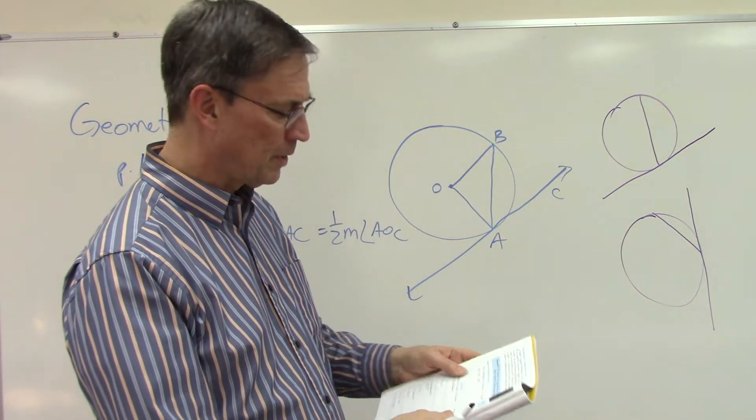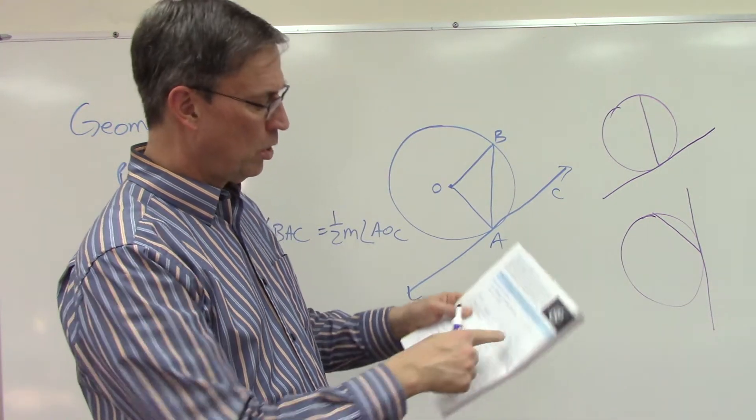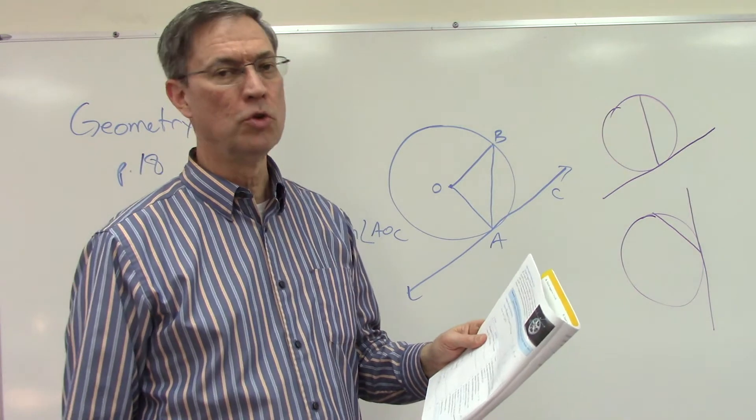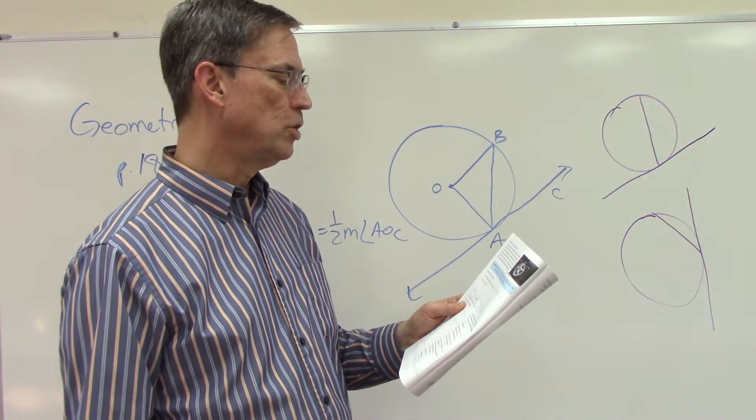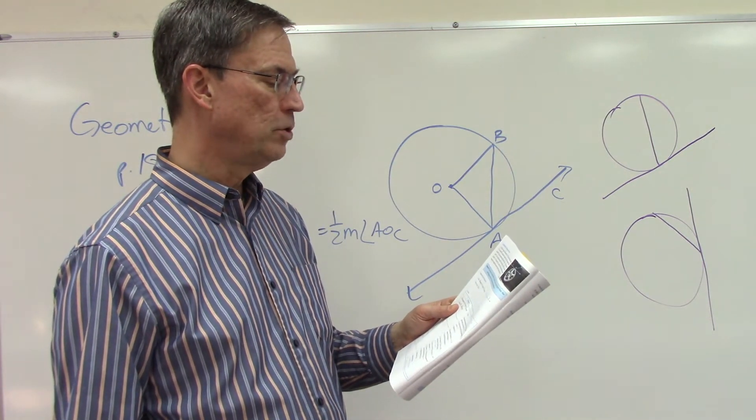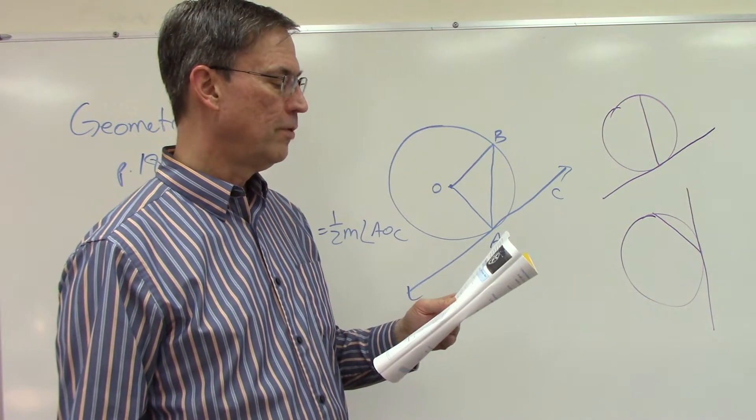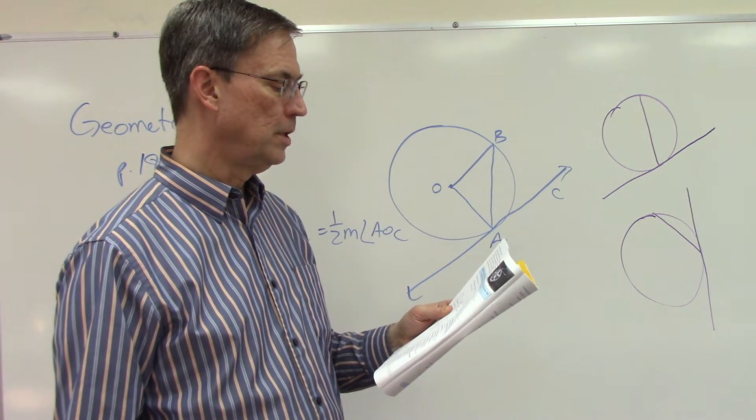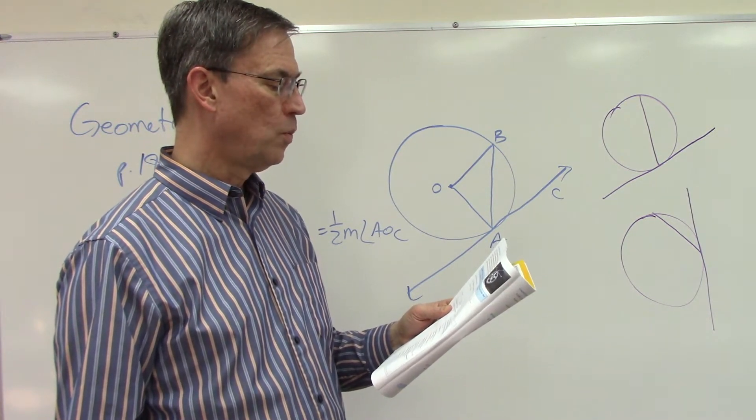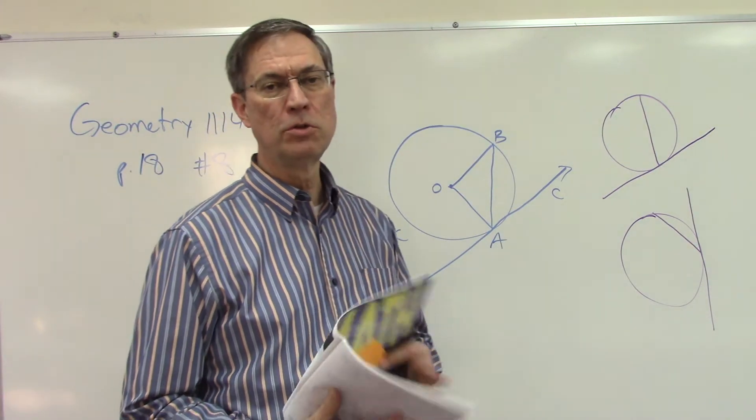So on page 17, there's a long proof of why this is true, but what's the bottom line? It says the measure of an angle formed by a tangent and a secant drawn from the point of tangency is equal to one half the measure of the intercepted arc.